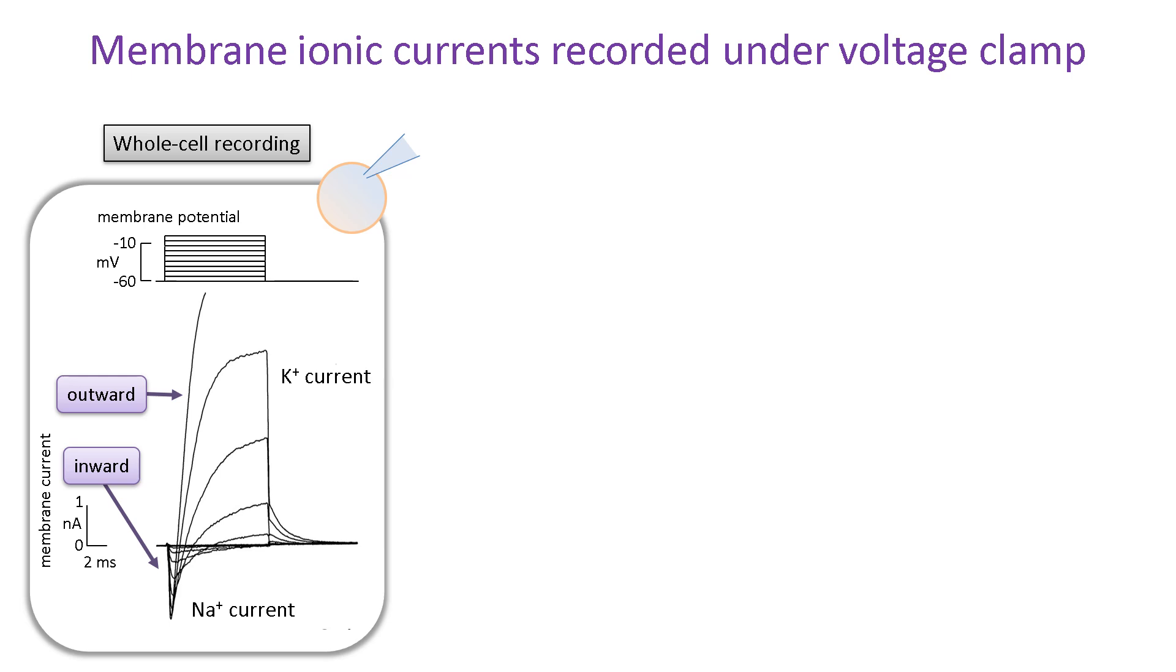There is no reason for drawing inward currents in the downwards direction and outward currents upwards, except that it has become the convention. By having this convention, anyone can immediately tell the direction of current from how it is plotted.